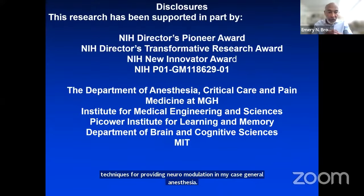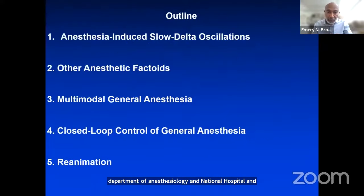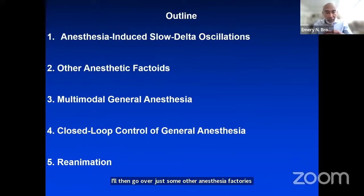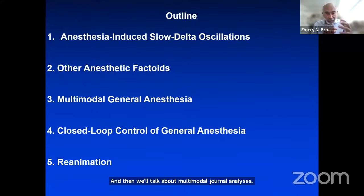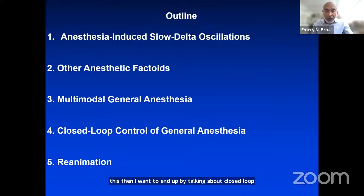These are some of the funding sources I've had the good fortune to have: support from NIH, support from my Department of Anesthesiology at National Hospital, and also the institutes to which I belong at MIT. This is the outline I'm going to follow: anesthesia-induced slow delta oscillations, some anesthesia factoids everyone should know, multimodal general anesthesia, and then closed-loop control of general anesthesia and the concept of reanimation — turning the brain back on after anesthesia.